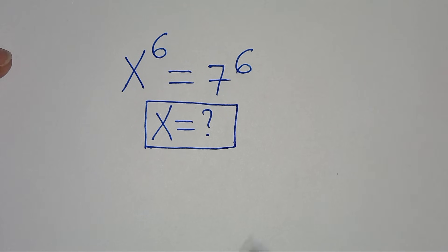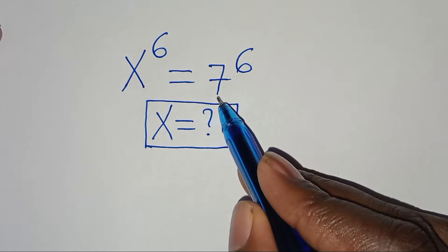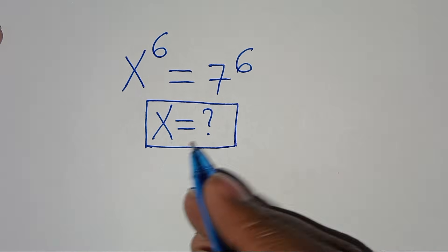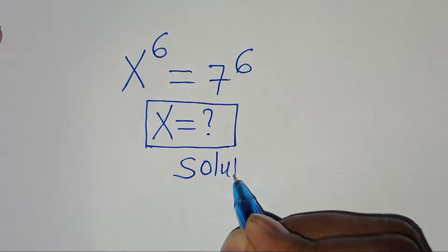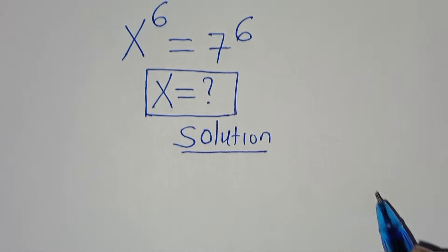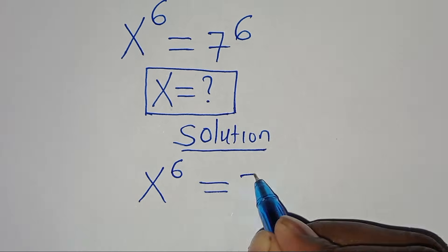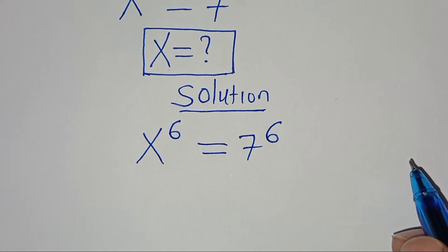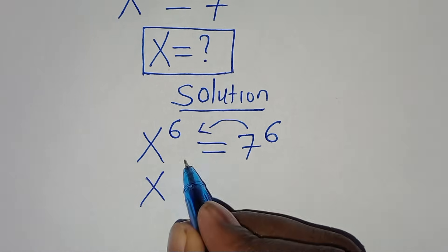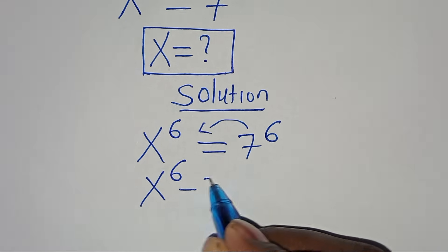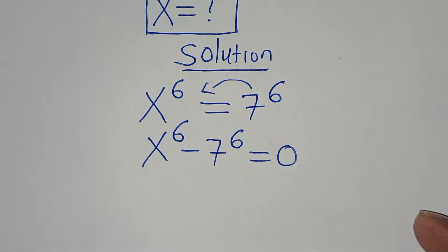Hello everyone, you're welcome to solve this nice exponential equation here, which is x to the power of 6, this is equal to 7 to the power of 6. So what are the values of x? The first step is to take 7 to the power of 6 on the left hand side so that we have x to the power of 6 subtract 7 to the power of 6, this is equal to 0.